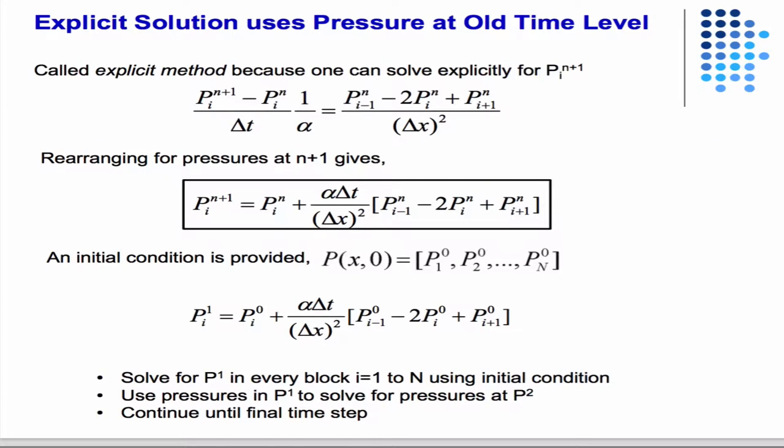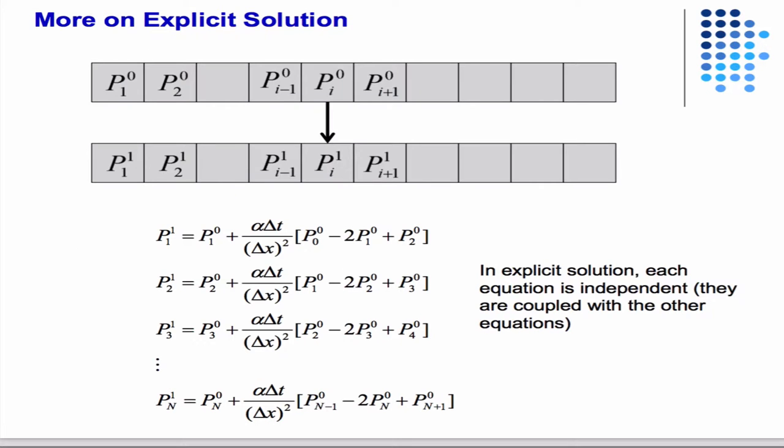We reviewed this at the beginning of class. We can rearrange to get this equation where everything on the right-hand side is known and the equations are decoupled in space. Then we can increment them in time and space. These are writing the equations for each grid block in space.